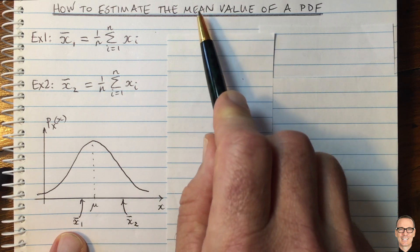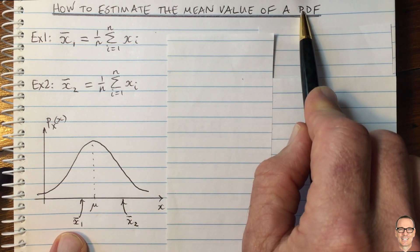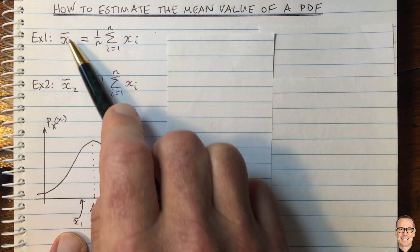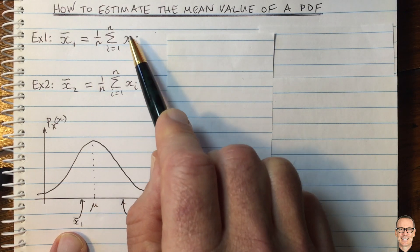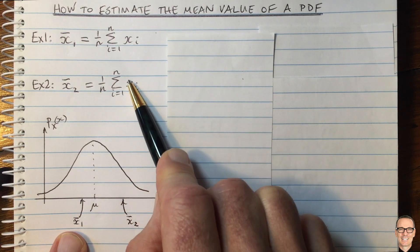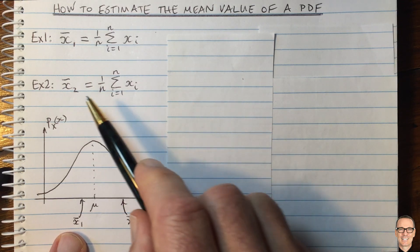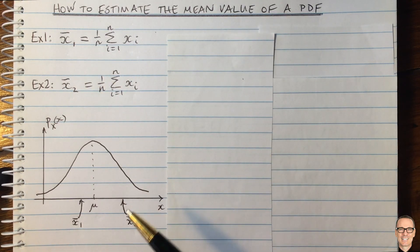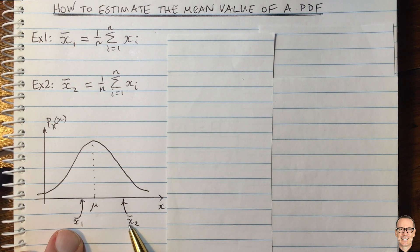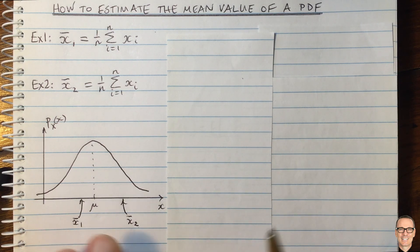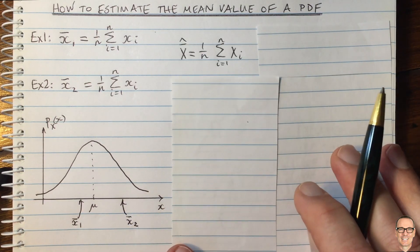So they are estimates of the mean value of a random variable, but they themselves are random. They depended on which particular samples you took. And that's a very key concept to understand about estimating random variables. These estimates are themselves random. So let's write down an equation for that then.